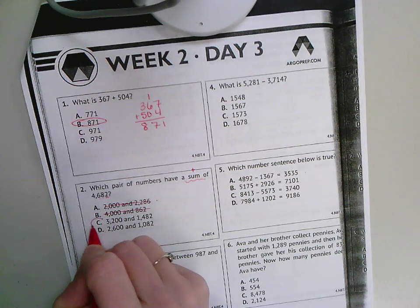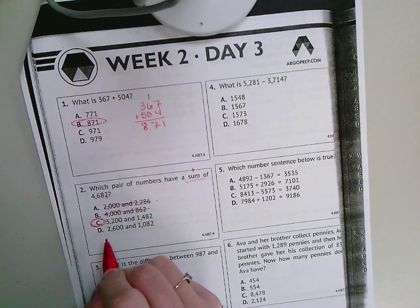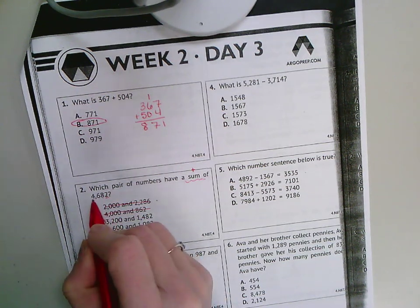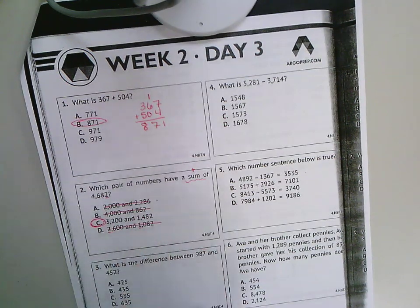So that one does work. And just to check, D will not work because of that thousands place: 2,000 plus 1,000 is only 3,000, so my answer is C.